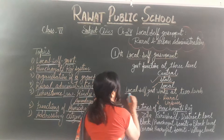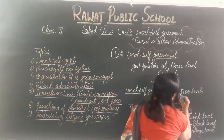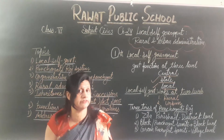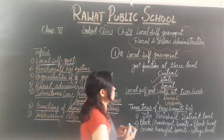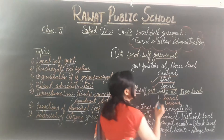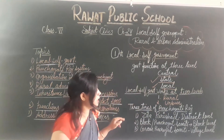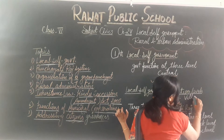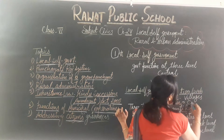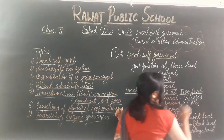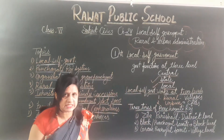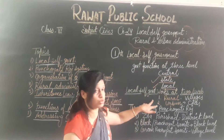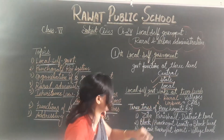Now, Local Self-Government works at two levels. Local Self-Government works at two levels. First is Rural and second is Urban. Rural means villages and urban means cities. Clear?